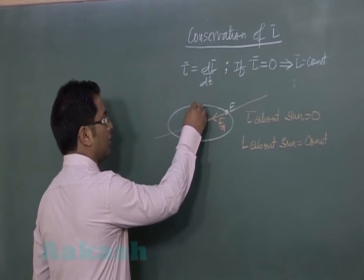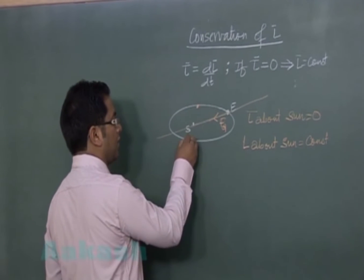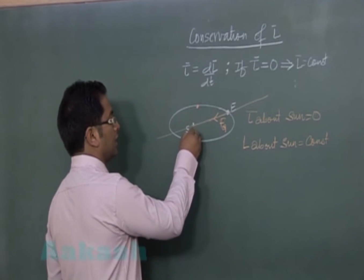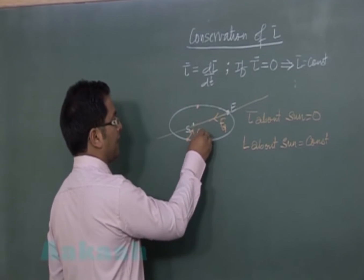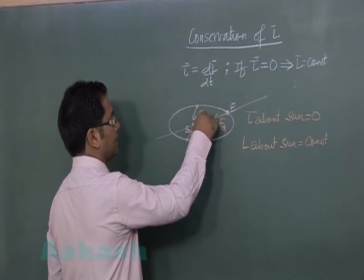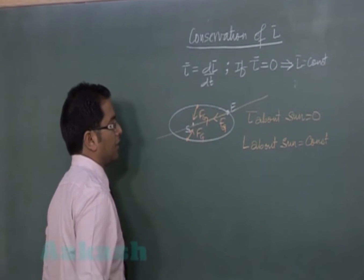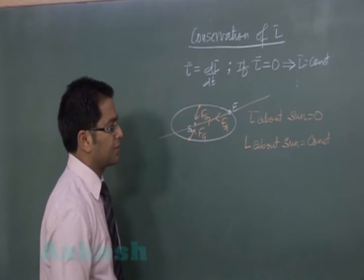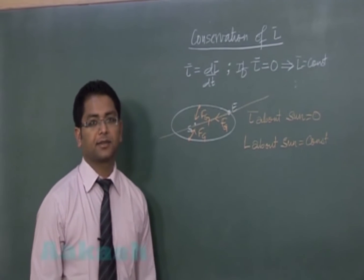Whether here or there, the force of gravitation is always directed towards the Sun. So angular momentum has to be constant.